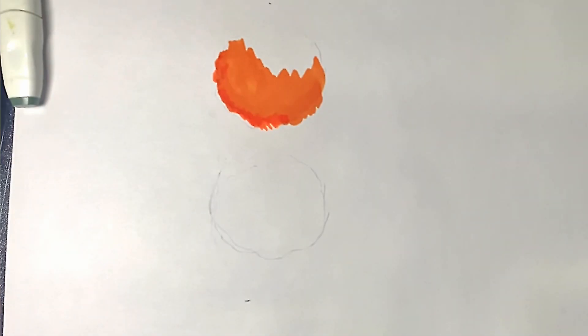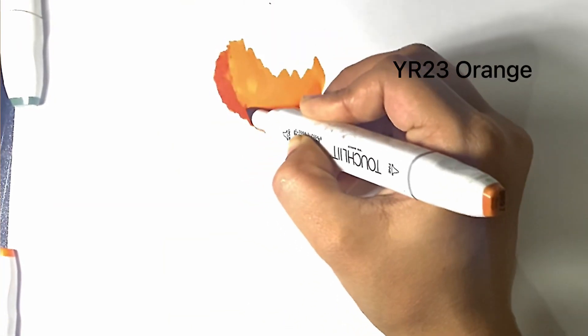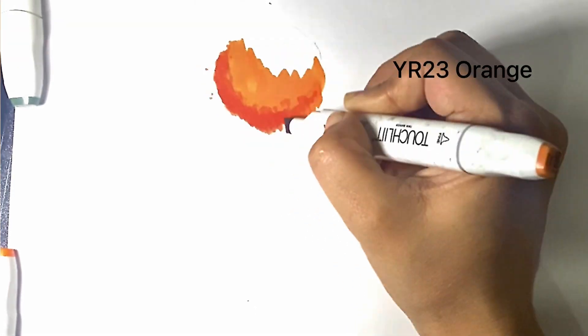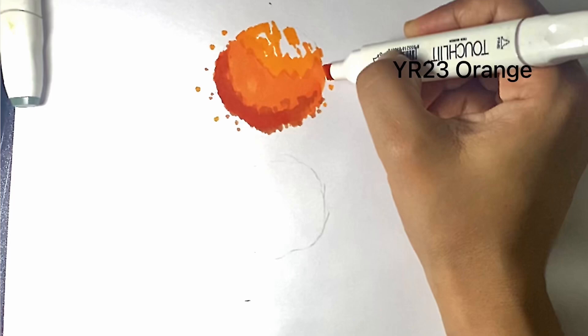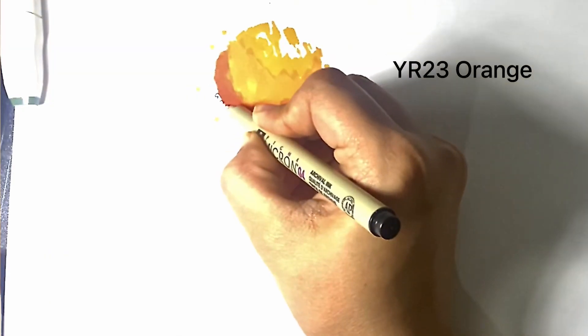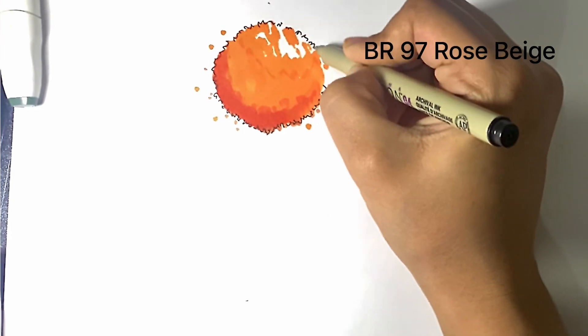Then we're going to use our first color marker, which is YR23 orange shade. After using it, we're going to add our shadows and highlights using the rose beige BV97.